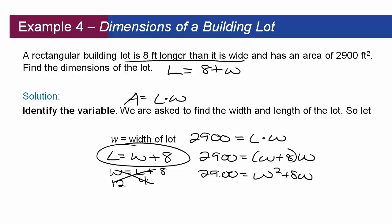And again you're seeing the squared and the linear terms so you're thinking uh oh quadratic, set equal to zero: w squared plus 8w minus 2900. Solve your quadratic.